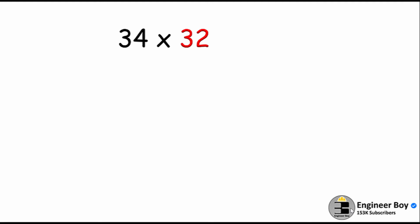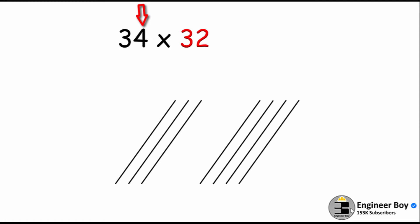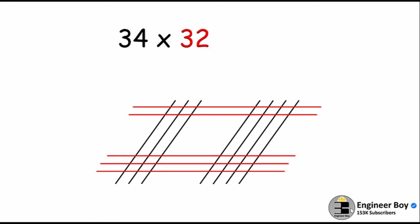Next I'll do a bigger number: 34 times 32. Three lines for the digit 3 in one direction, leave some space, then four lines for the digit 4 in the same direction. Then draw three lines for the digit 3 in the other direction — make sure you start from the bottom — then leave some space and draw two lines for the digit 2. Split the diagram and count: on the right we got eight intersections, at the middle we have 18.